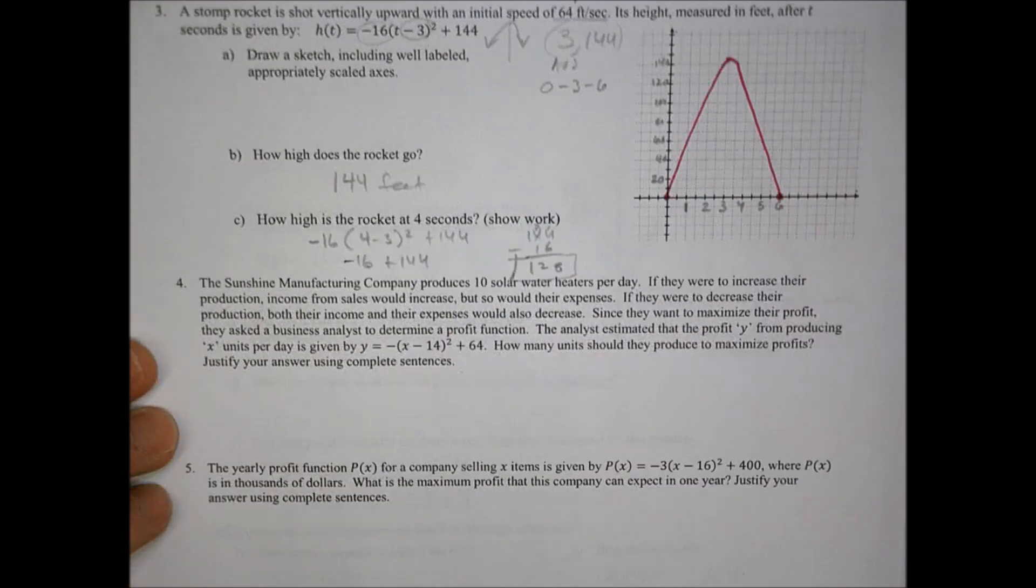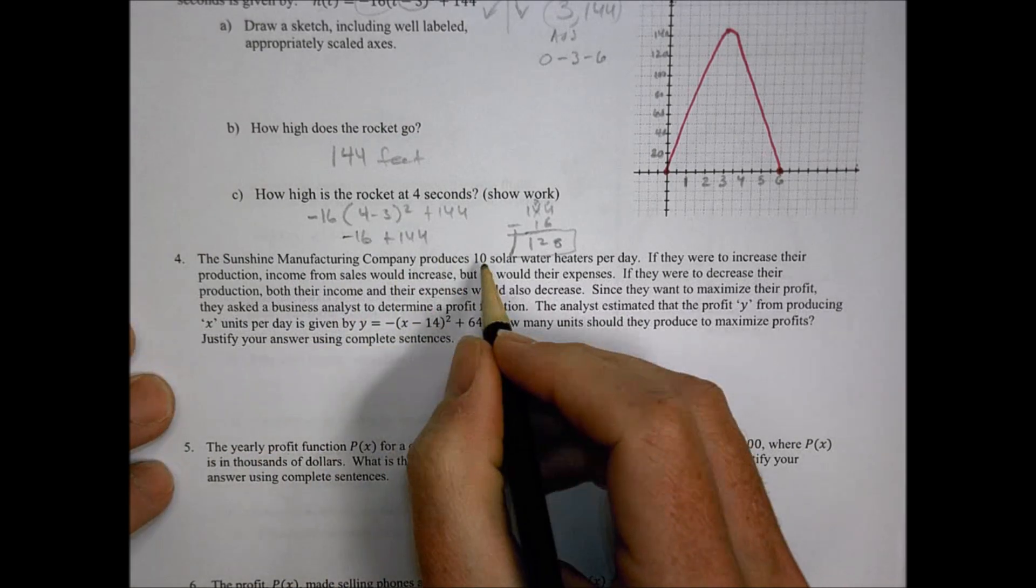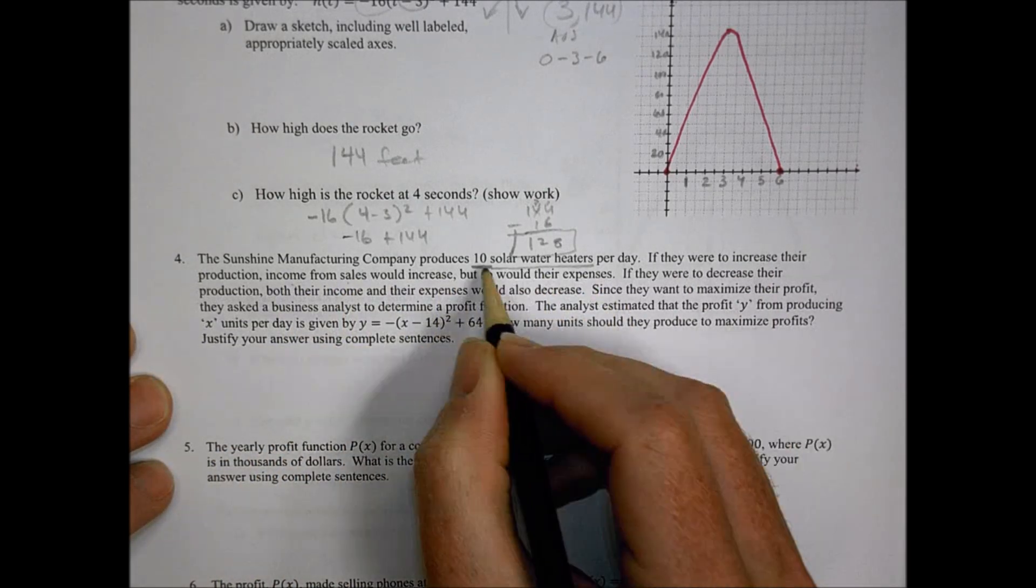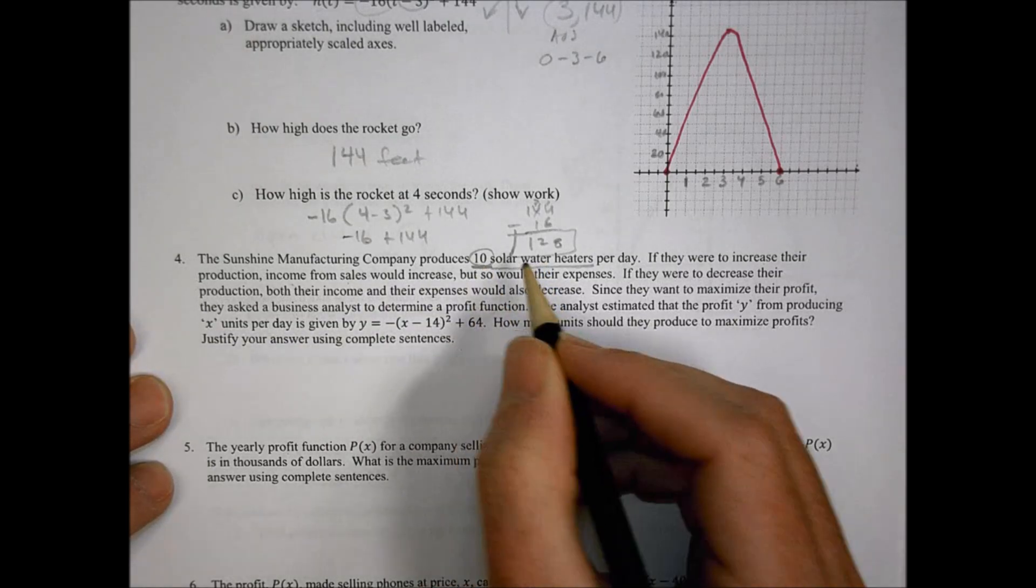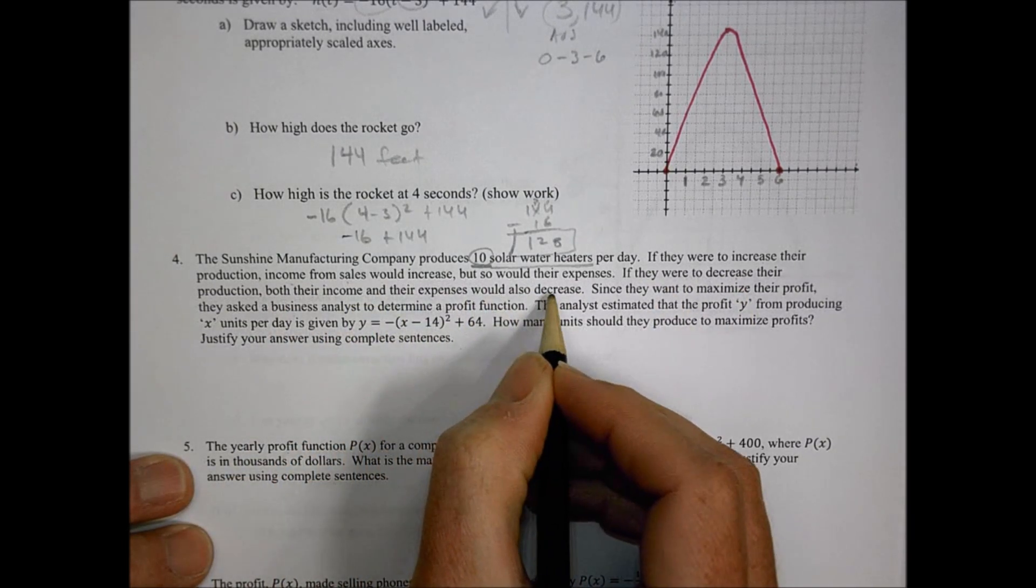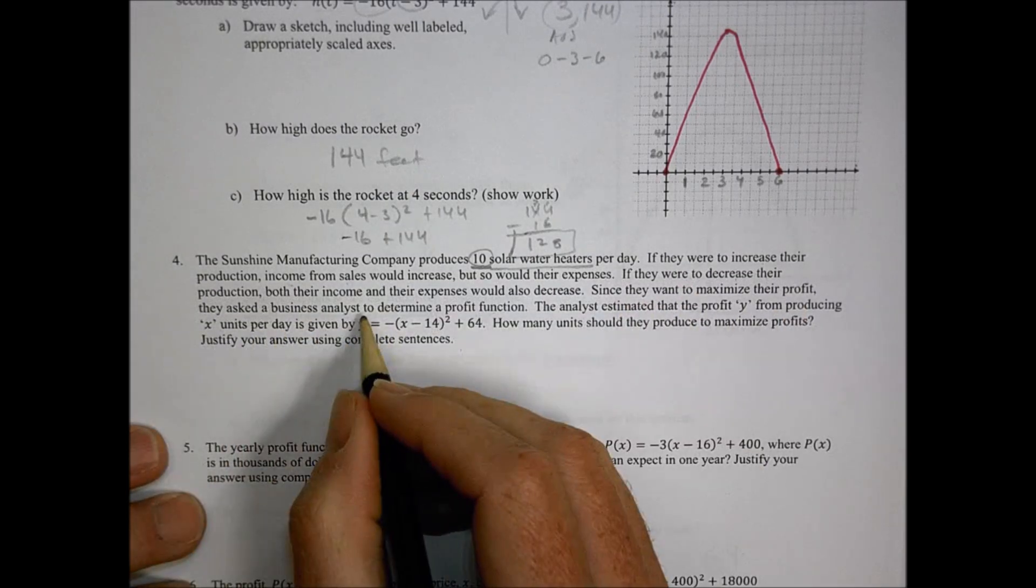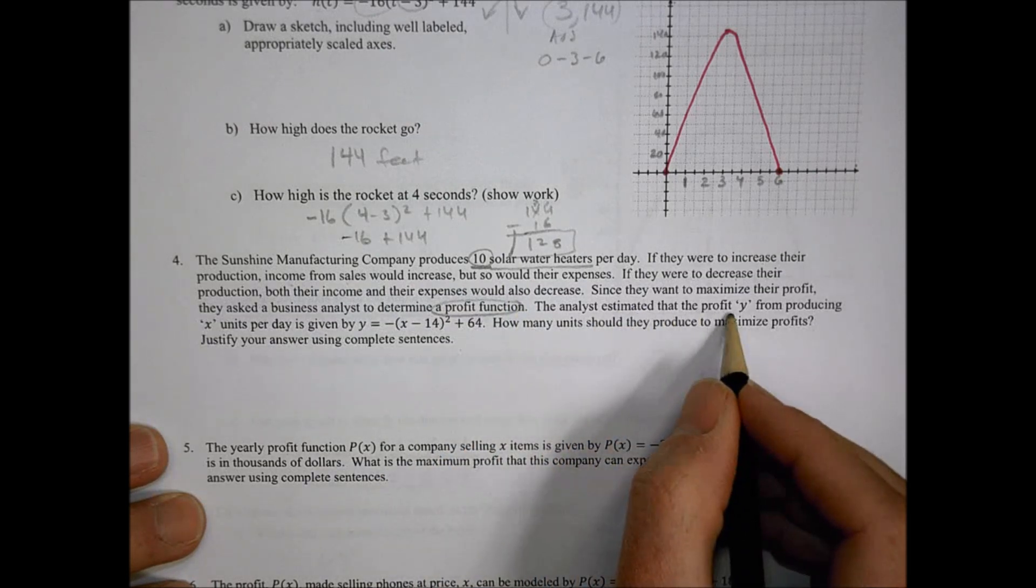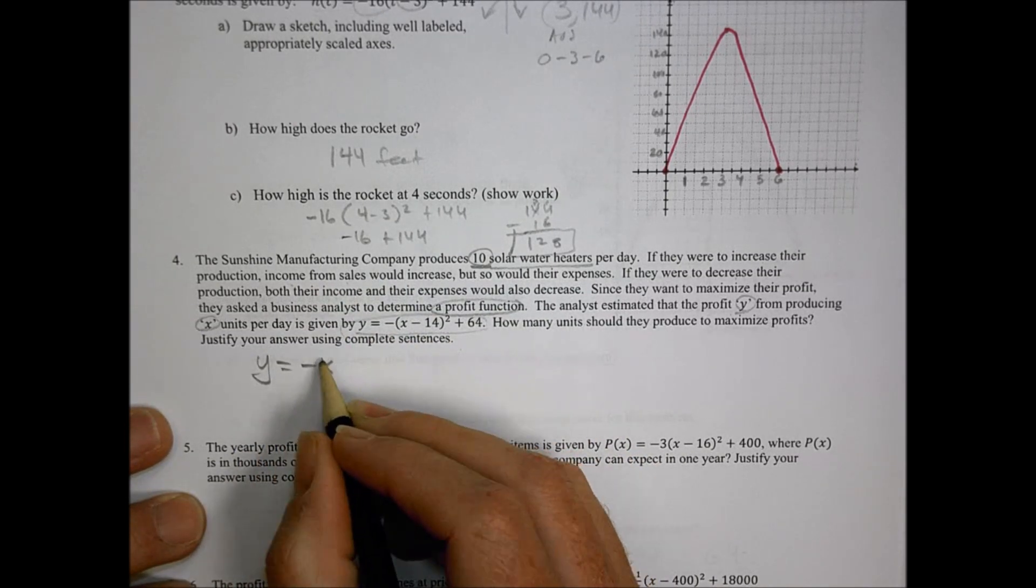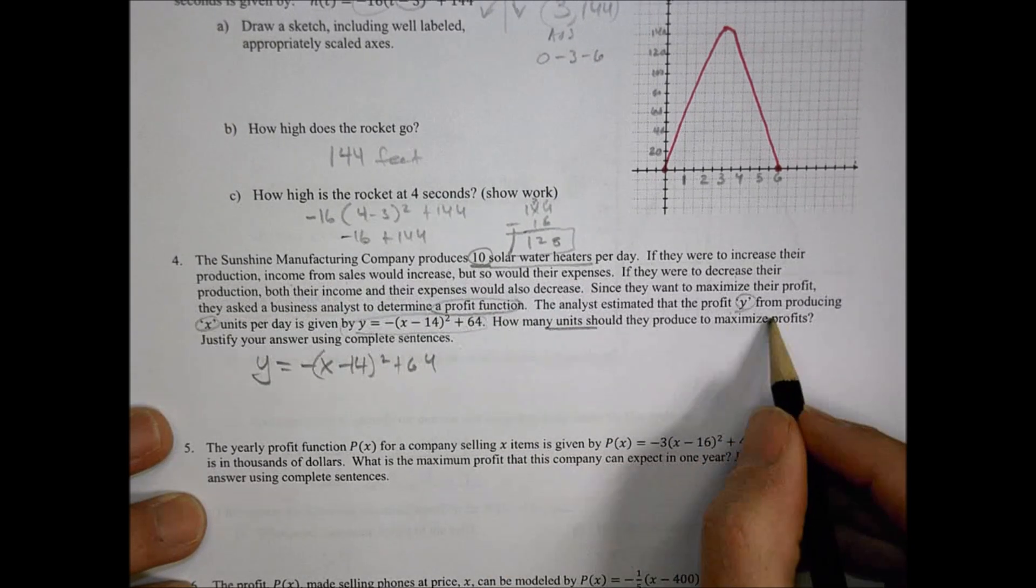Number four and five are some great questions that you don't actually have to do a ton of math for. You have to think about what these equations are telling you. The Sunshine Manufacturing Company produces 10 solar water heaters per day. If they were to increase their production, income from sales would increase, but so would their expenses. If they were to decrease their production, both their income and their expenses would also decrease.